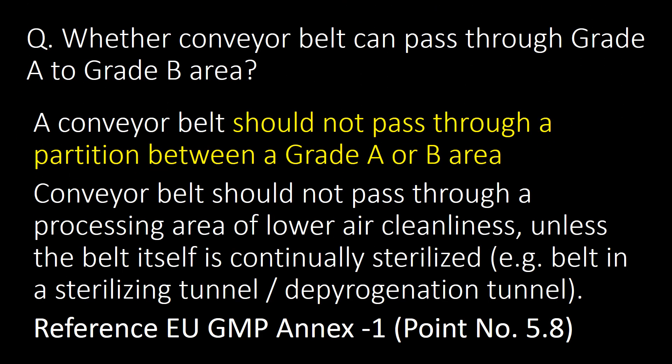Whether a conveyor belt can pass through from Grade A to Grade B area. A conveyor belt should not pass through a partition between a Grade A or B area, and should not pass through a processing area of lower air cleanliness, unless the belt itself is continually sterilized — for example, built into a sterilizing tunnel or depyrogenation tunnel. Reference: EU GMP Annex 1, Point No. 5.8.